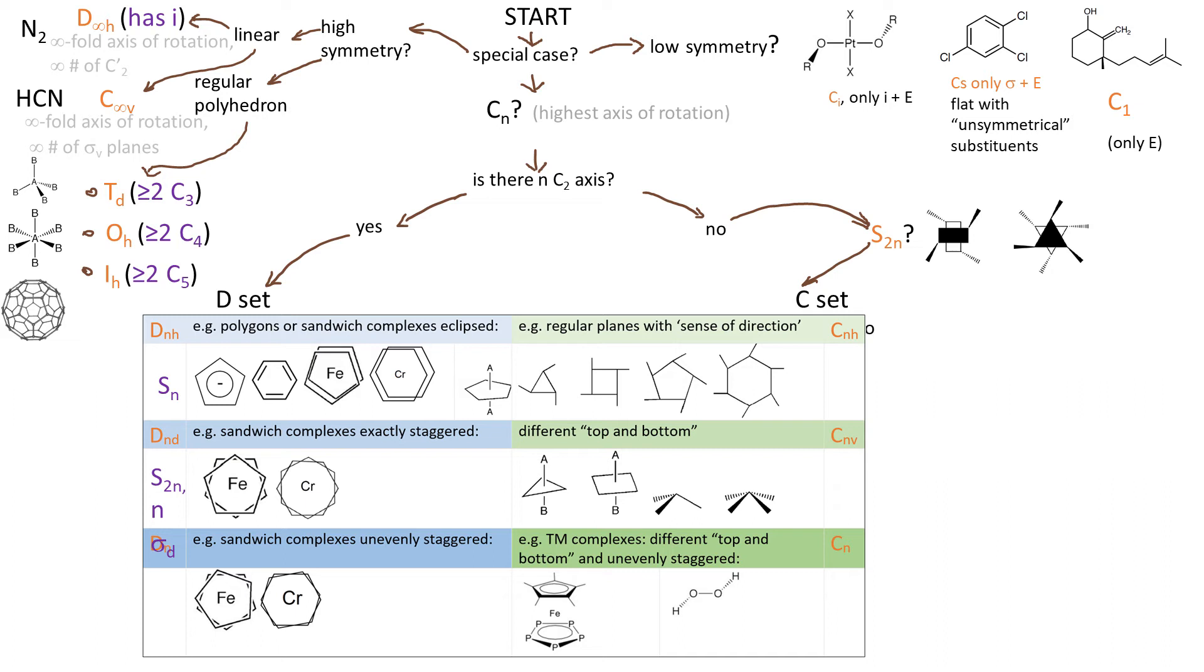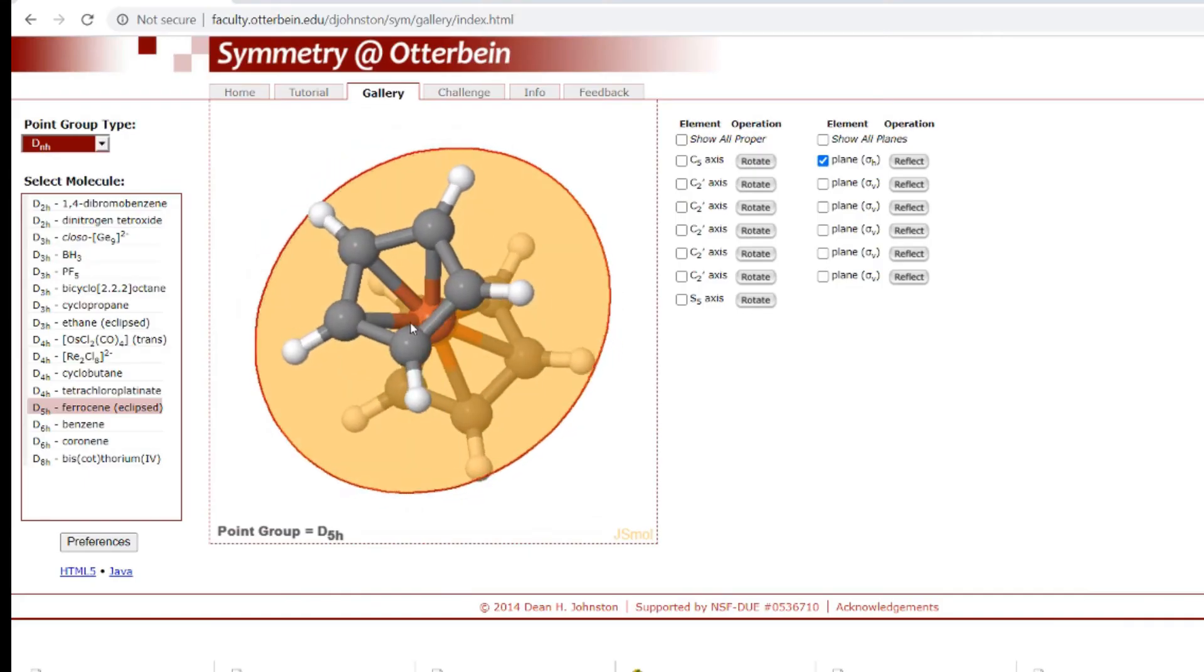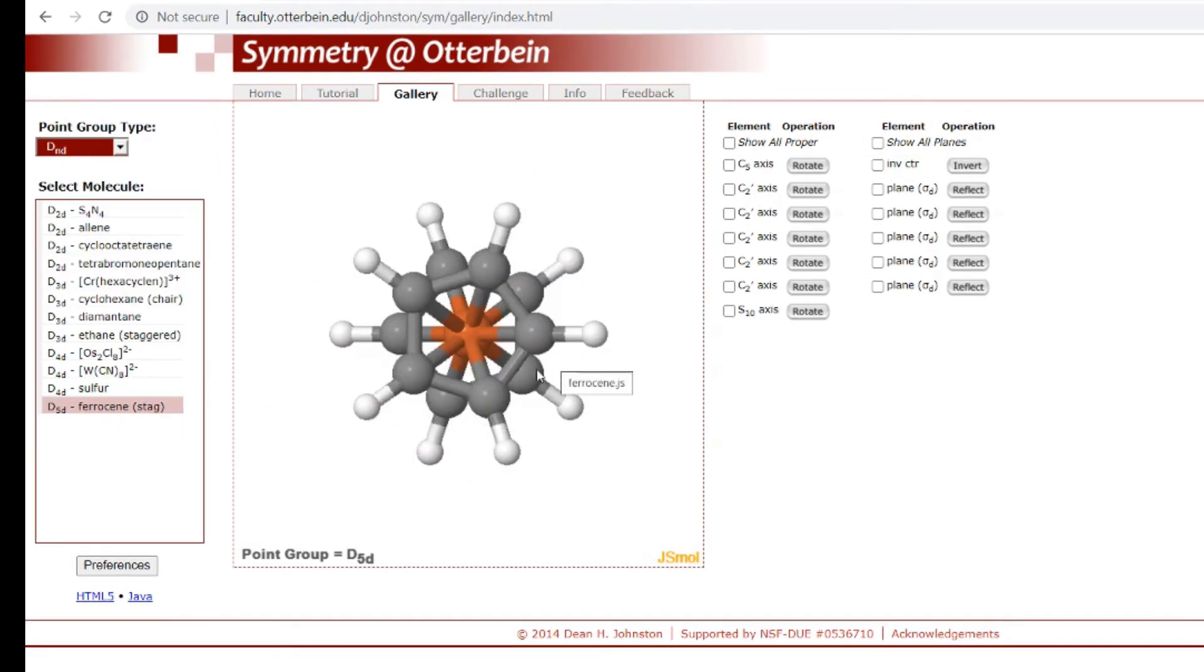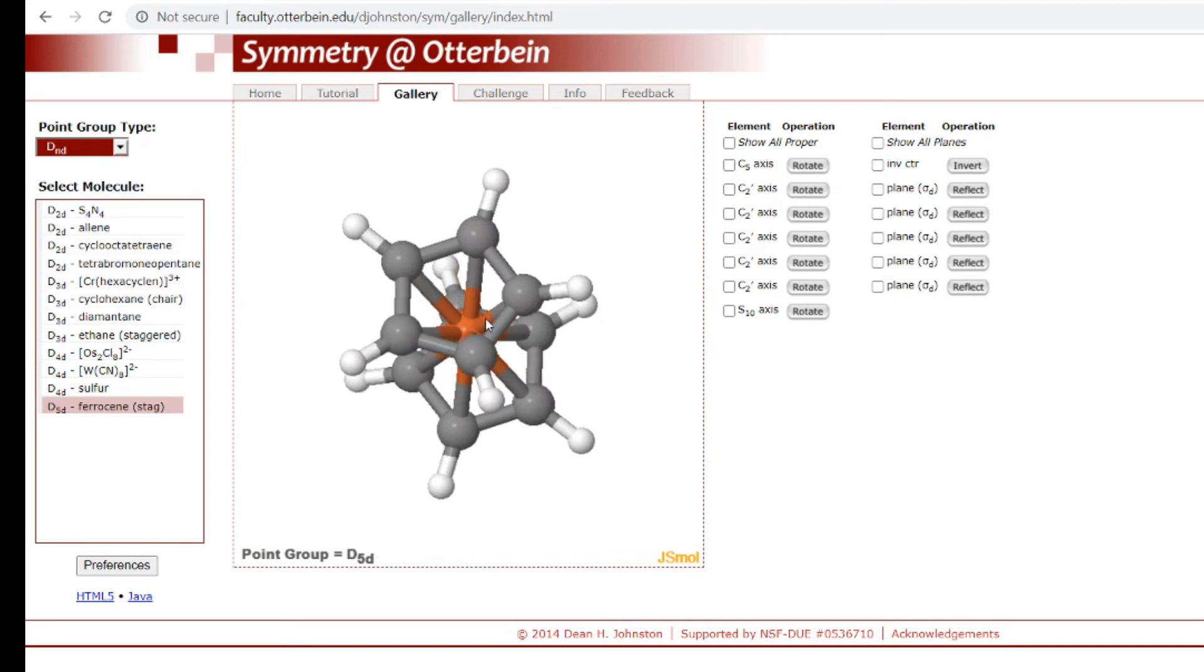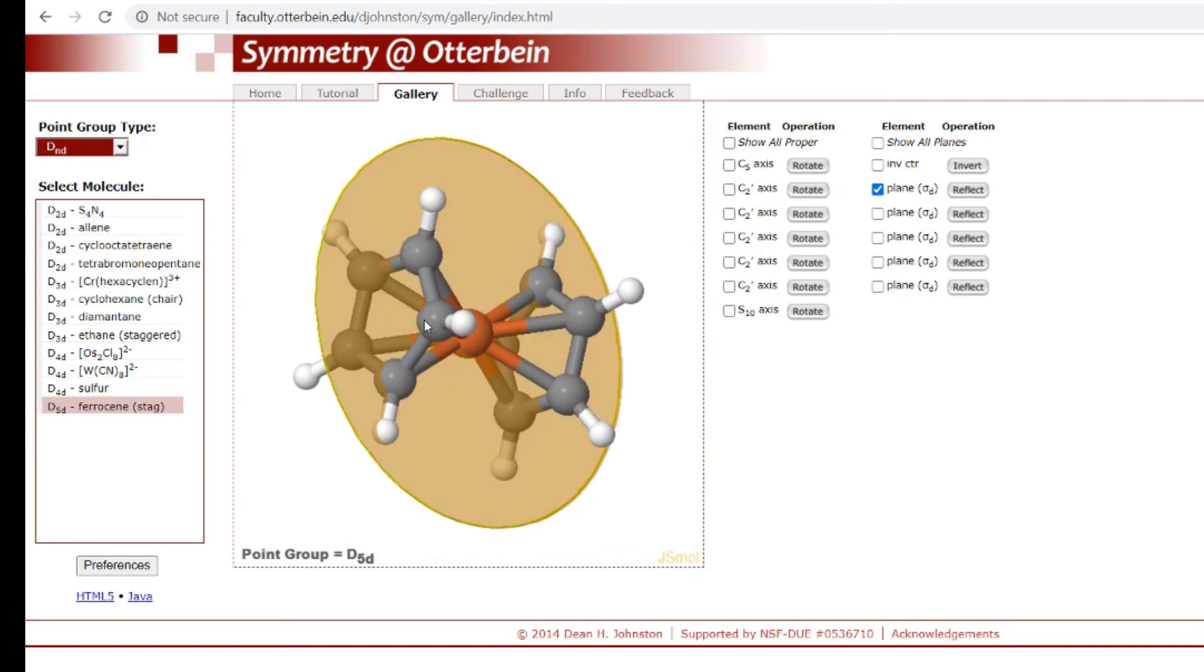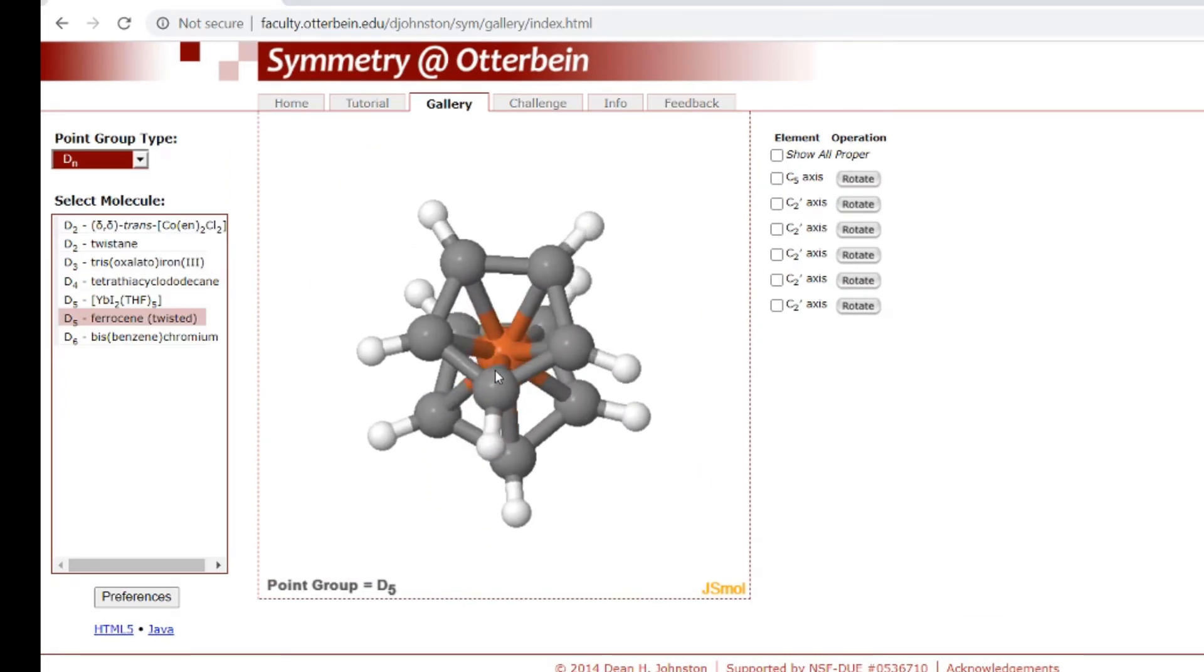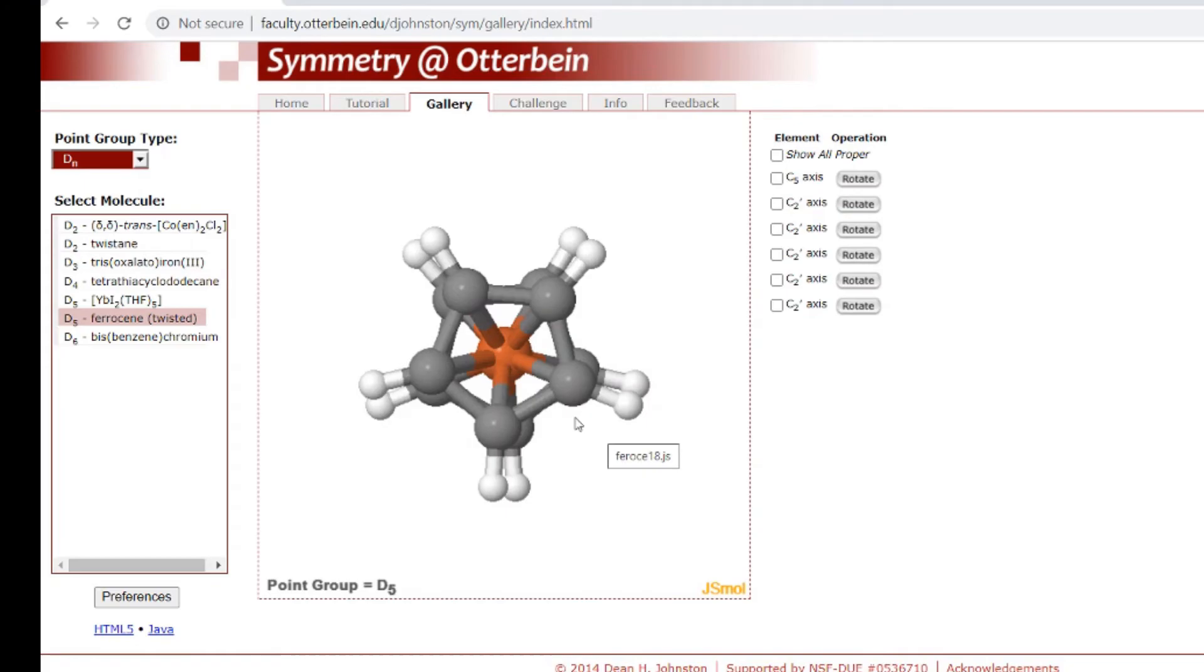Again H implies that there is sigma H in the group, so flat molecules like benzene immediately qualify for that group. Now with sandwich complexes both ligands have to be identical for the molecule to have N C2 axes and to belong to D set. In the DNH group the rings will be eclipsed because that allows for presence of sigma H. In DND group the rings will be perfectly staggered, so here we again look at ferrocene but the rings are rotated by 36 degrees with respect to one another. So that still allows for sigma dihedral. Lastly in DN group there is no planes at all because the rings are unevenly staggered.